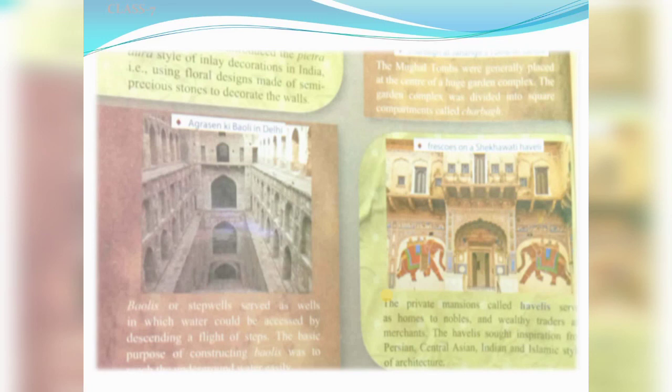The private mansions called havelis served as homes for the nobles and wealthy traders and merchants. Kuch ameer merchants aur traders hote thay — unke liye basically havelis ka nirman kiya gaya tha, aur woh us haveli mein shaan-o-shaukat ke saath apna jeevan yaateet karte thay. Havelis sought inspiration from Persian, Central Asian, Indian, and Islamic styles of architecture.